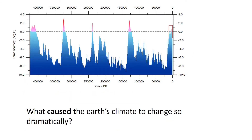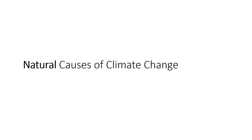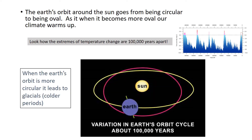So what has caused the Earth's climate to change so dramatically? Now that we have evidence to prove it, we need to think about what has caused it. First of all, let's look at the natural causes of climate change. The first natural cause is called Milankovic cycles.